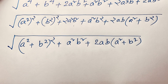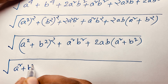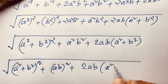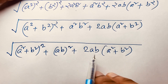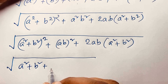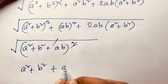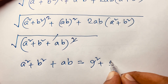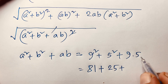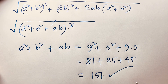So the square root of (a² plus b² plus ab)² equals a² plus b² plus ab. Substituting back a equals 9 and b equals 5, we get 9² plus 5² plus 9 times 5, which is 81 plus 25 plus 45. Adding these together gives 151. This is our final answer to this math olympiad question.